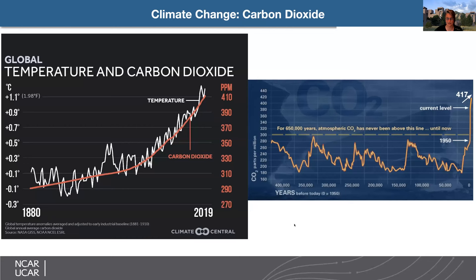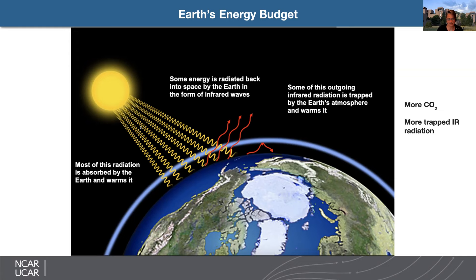Here is a quick lesson on the earth's energy budget. The sun emits shortwave radiation, most of which is absorbed by the earth and warms it. However, a portion is re-radiated back to space as infrared radiation. Greenhouse gases like CO2 and water vapor re-radiate some of that infrared back down to earth, warming it further — sometimes described as CO2 acting as a blanket. The physics here are very straightforward: the more CO2 in the atmosphere, the more infrared radiation returns to earth and the more the earth warms.